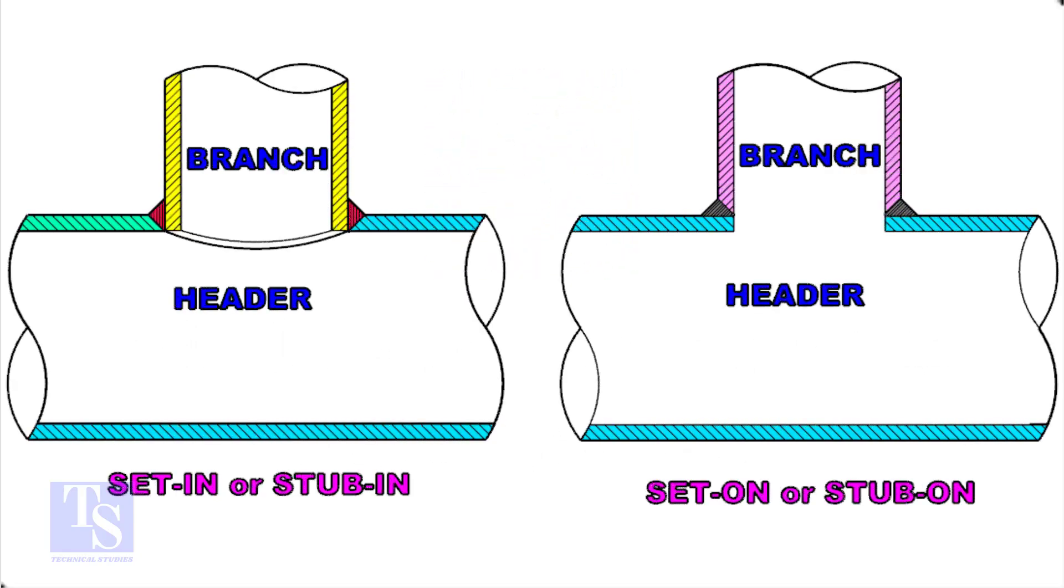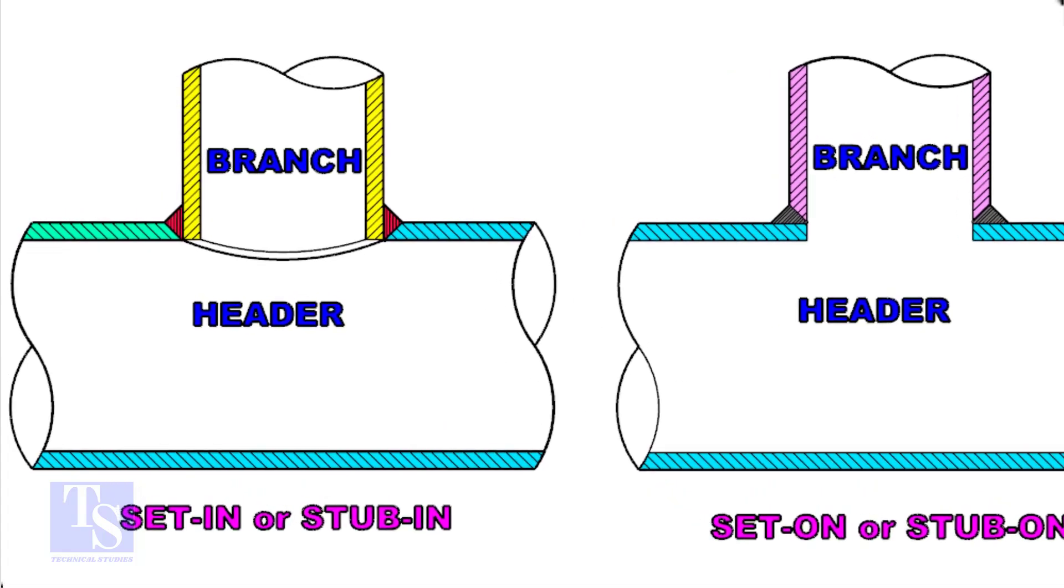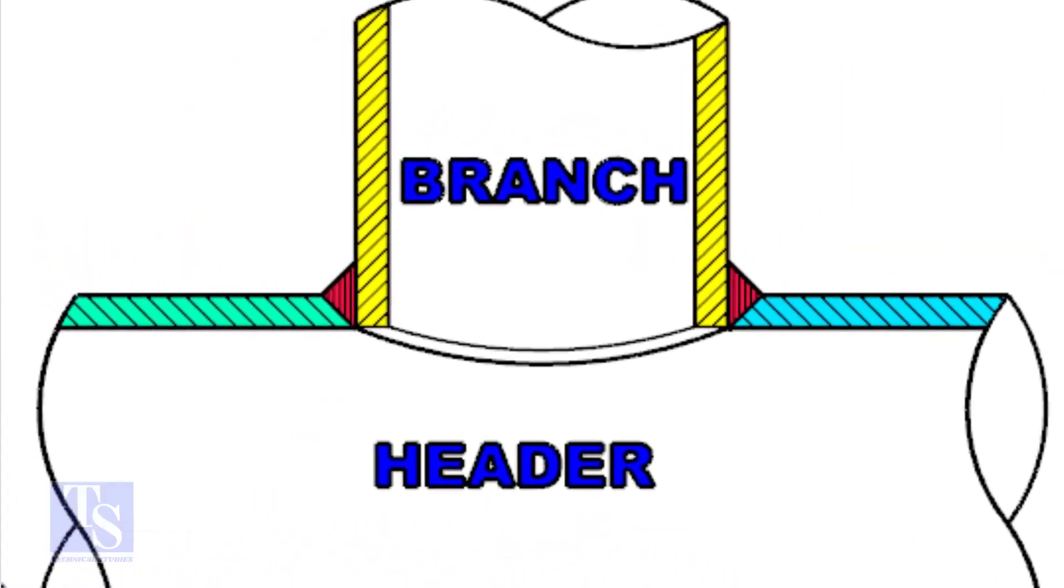Let us check the difference between a stub-in and stub-on connection. Look at the stub-in joint, the bevel is prepared on the header. And the branch pipe is in the header.